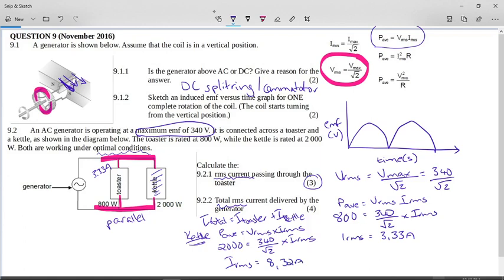So the total I_RMS is going to be 8.32 plus 3.33, which is going to be 11.65 amps. So remember, in a parallel circuit the current is divided, and if the current is divided, you have to put the two currents together to get the total current for the circuit.